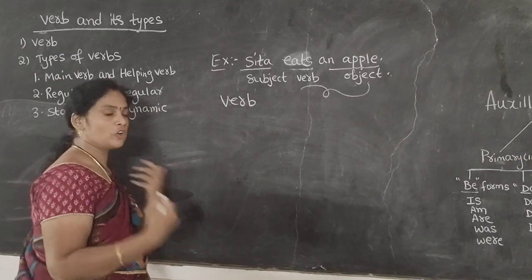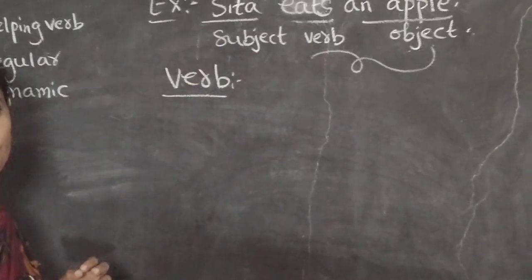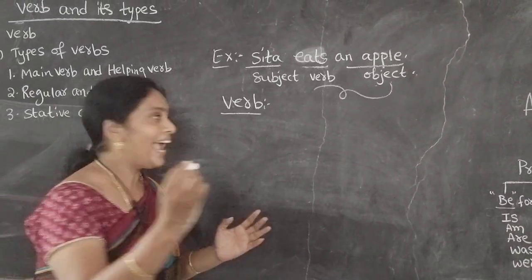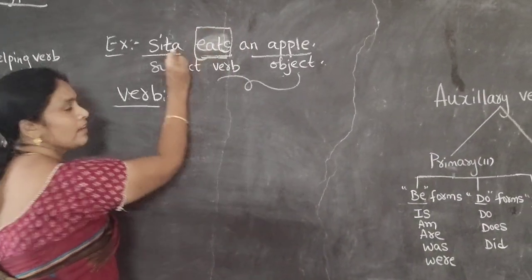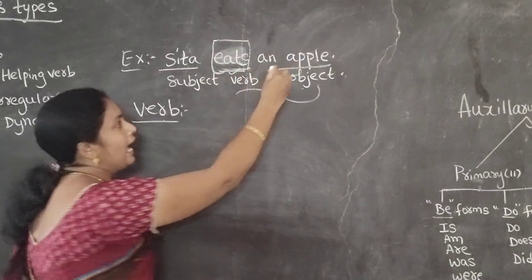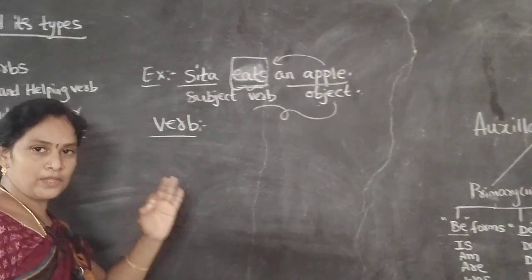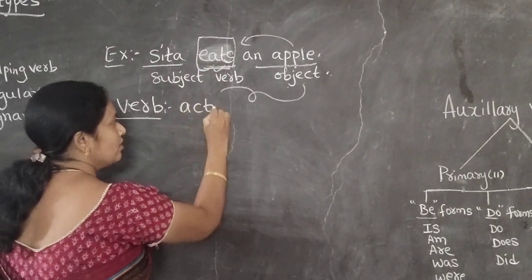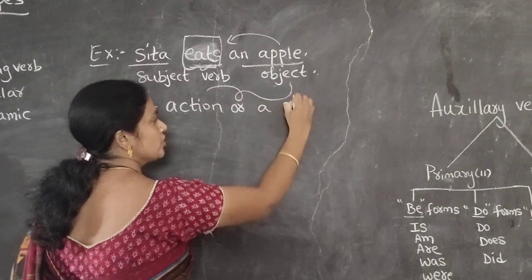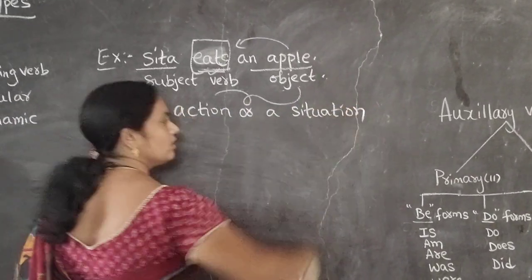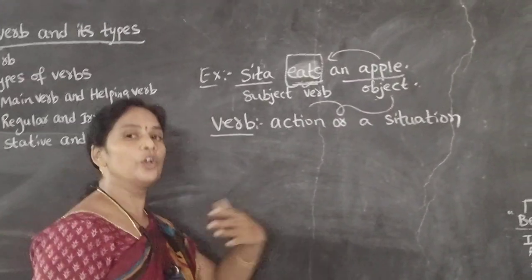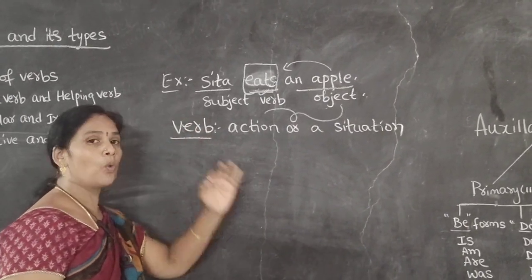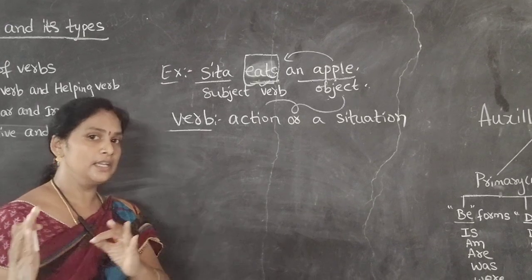So now we came to our topic — the verb. So what is a verb? A verb describes an action. That means what here Sita is doing? Eating. What she is eating? An apple. So from this we can say a verb describes an action or a situation. The verb tells what a subject is doing in a sentence.